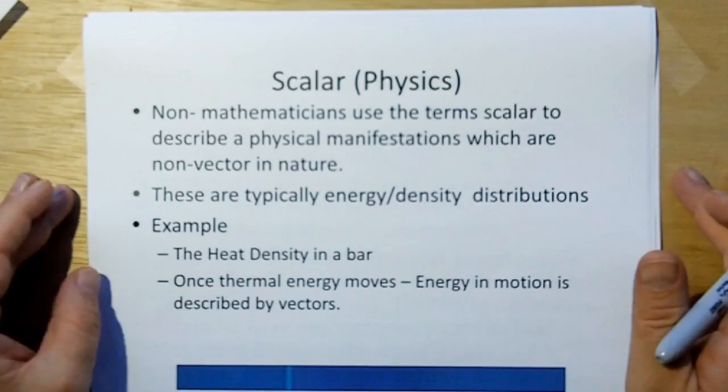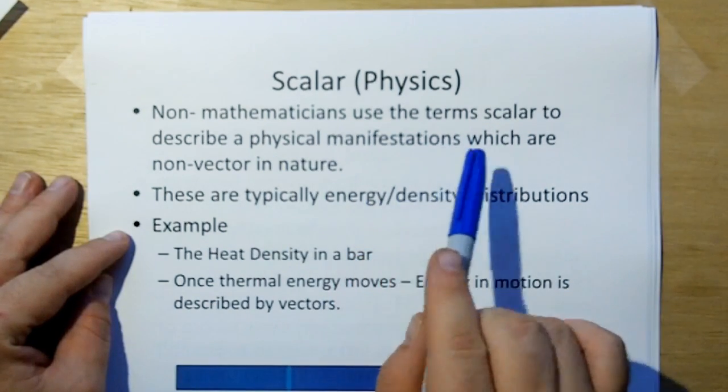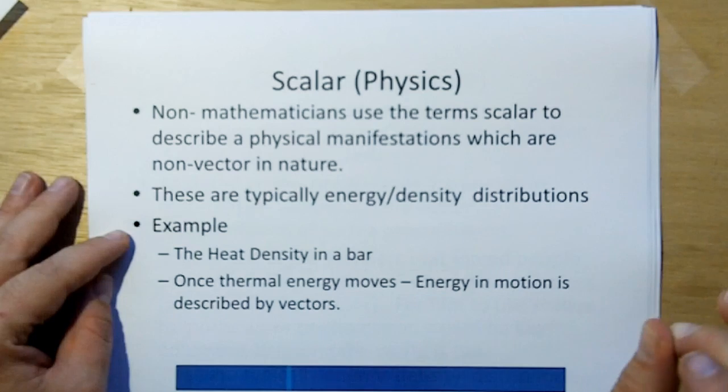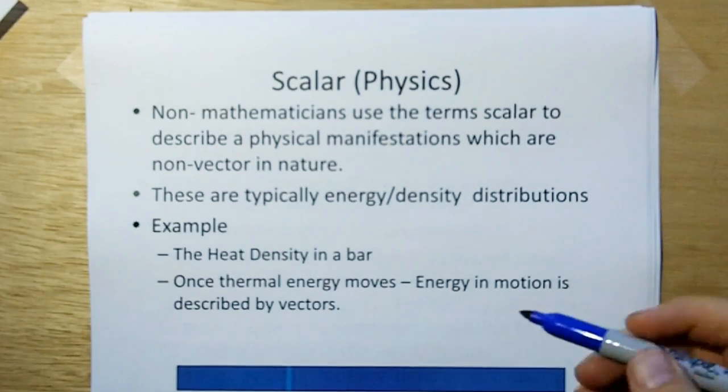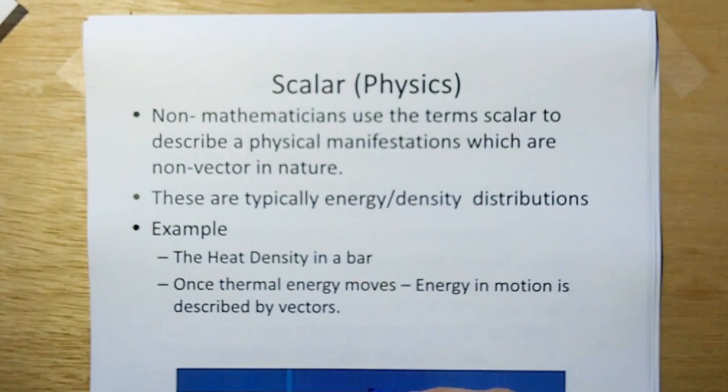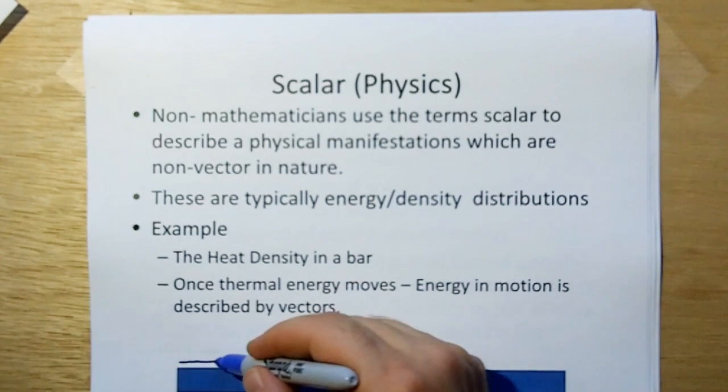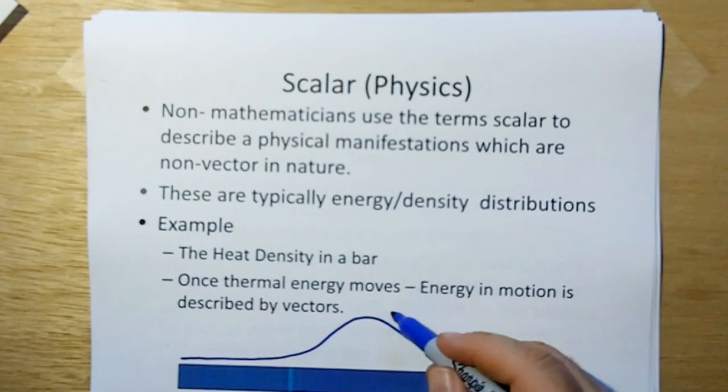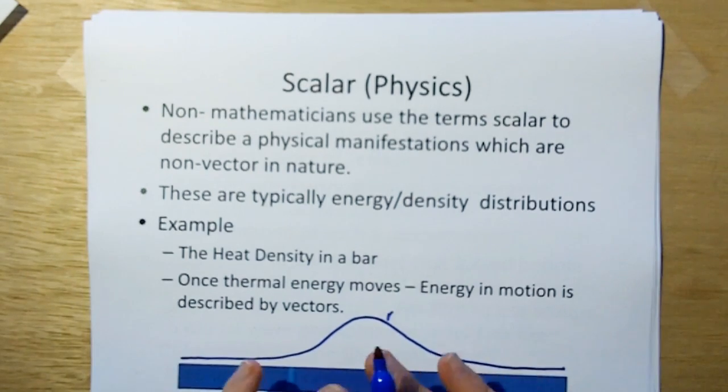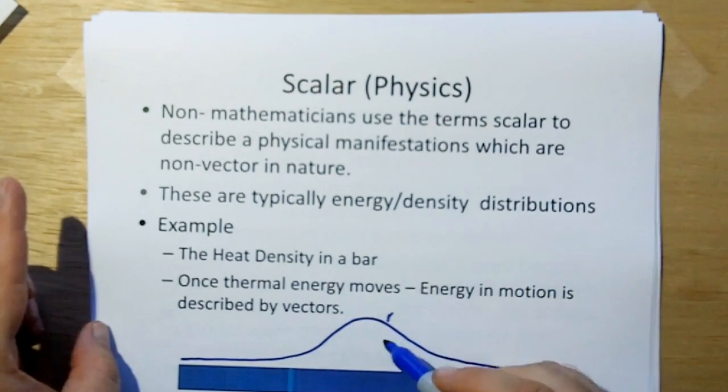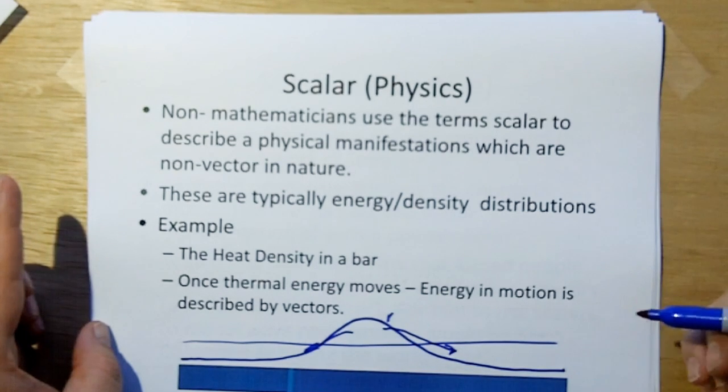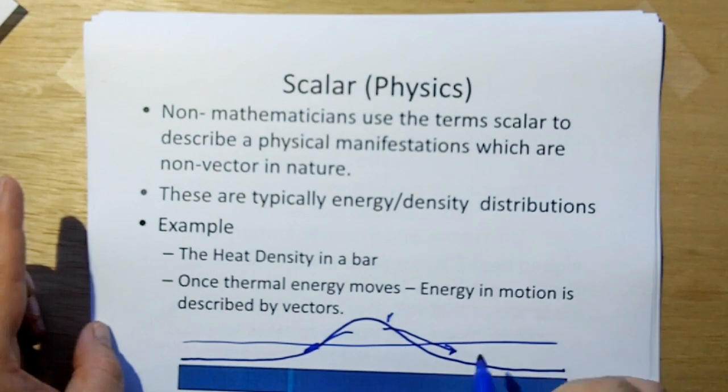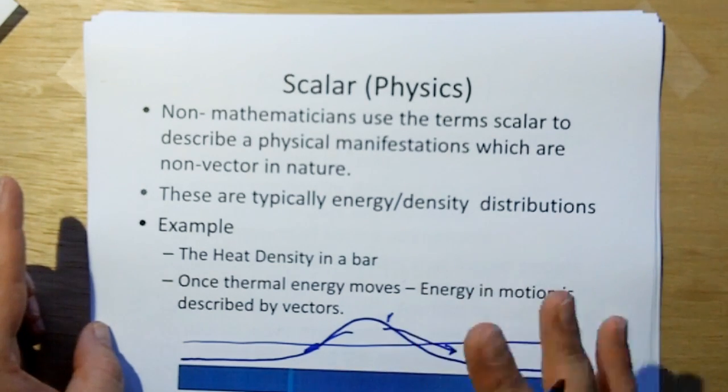Scalar is also used in the world of physics to represent a non-mathematician used the term scalar to describe physical manifestations which are non-vector in nature. These are typically energy distributions. For example, heat density in a bar. If we grab, this is a bar of aluminum, and we apply the heat source to the center, the energy, the heat distribution of the bar would look something like this, where this represents more heat and less heat. And then once you start the simulation or you let this thing go, you're going to see that the heat is going to start flowing until it becomes a uniform distribution. But the minute that energy is in motion, it's described in terms of vectors. So you can describe the energy distribution as a scalar field, but once that field, once that energy is in motion, it becomes a vector.